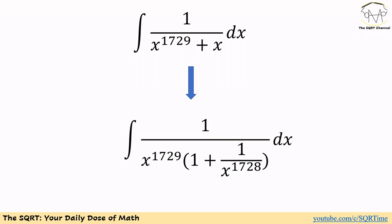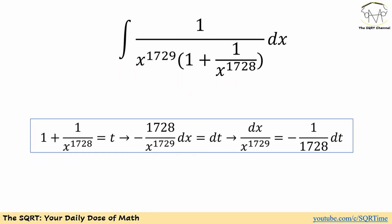First we are going to focus on the first problem. To solve this we are going to do something interesting: instead of factoring x from the denominator, we are going to factor out x to the power of 1729. If we do that, we will have the integral of 1 over x^1729 times (1 plus 1 over x^1728), then dx.